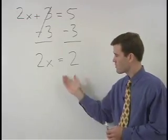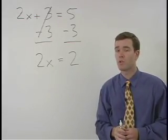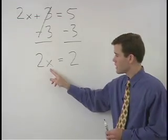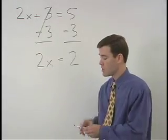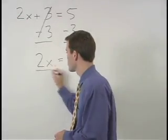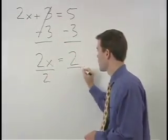And we're left with a situation that is just like the problems in the previous section. To get x by itself, since it's being multiplied by 2, we just divide both sides of the equation by 2.